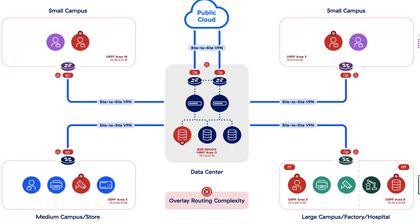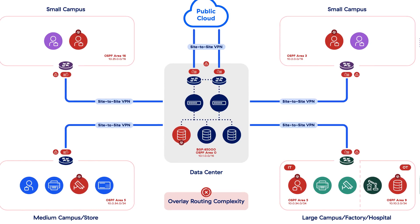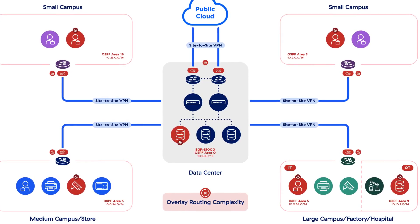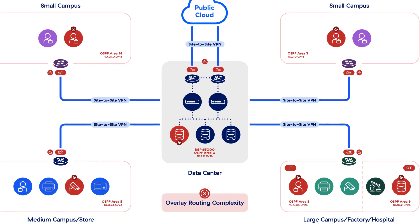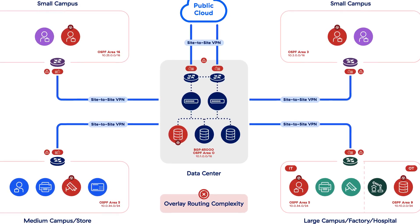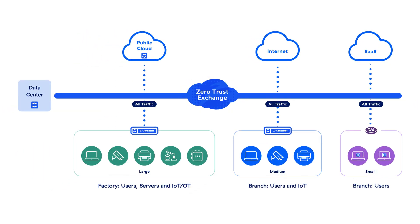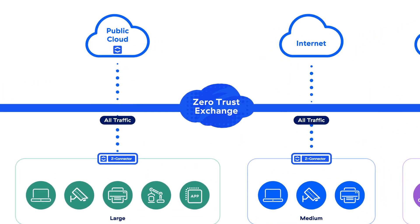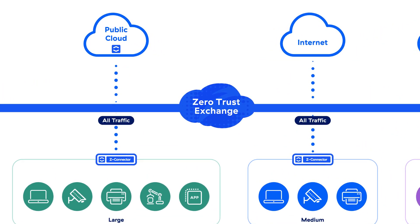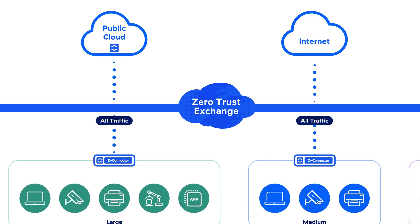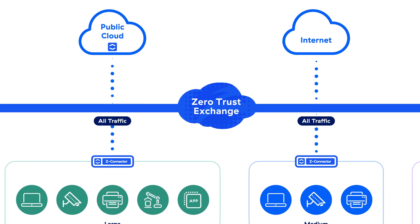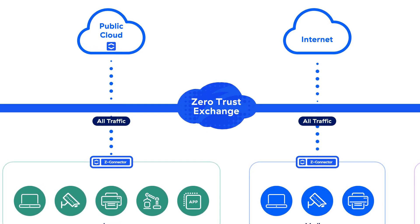The third challenge is overlay routing. Overlay routing introduces significant cost and complexity, making it harder for you to support business agility, integrate acquisitions, and enable productivity and collaboration. Zscaler's Zero Trust SD-WAN solution makes it easy to connect your branch offices, factories, and data centers without the complexity of site-to-site VPNs or overlay routing. Users and devices can communicate with servers and applications based on your business policies, regardless of whether the application is in a branch office, a data center, or the public cloud.